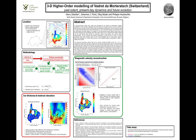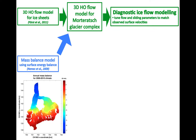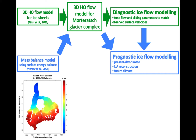Finally, in the third part, which is shown in blue, the time dimension is added. This is done by coupling our higher order model with a mass balance model, and by doing so we can make some prognostic ice flow modeling, which means that we can simulate how the glacier would evolve under a certain climate.